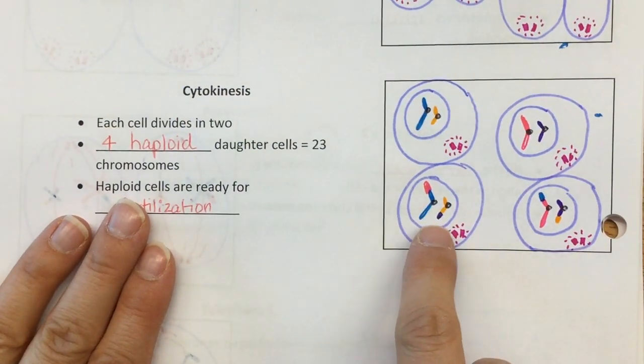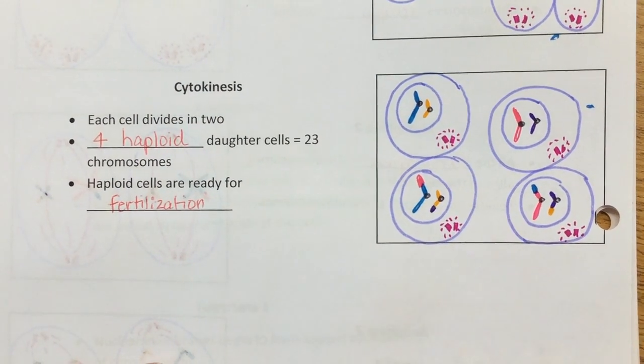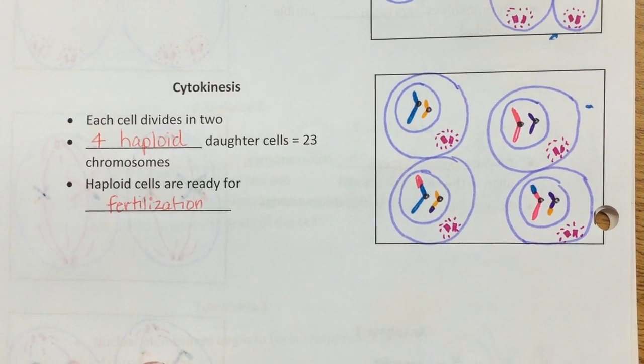Four and now we ended with two, okay? So we split it in half. That's what's going on, okay? And that's the end of meiosis. Awesome, great.